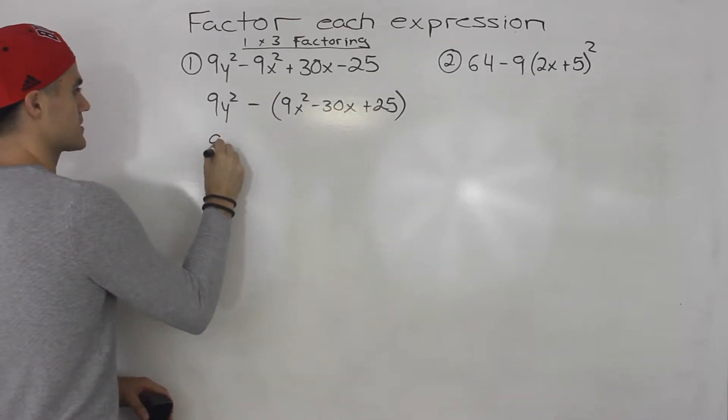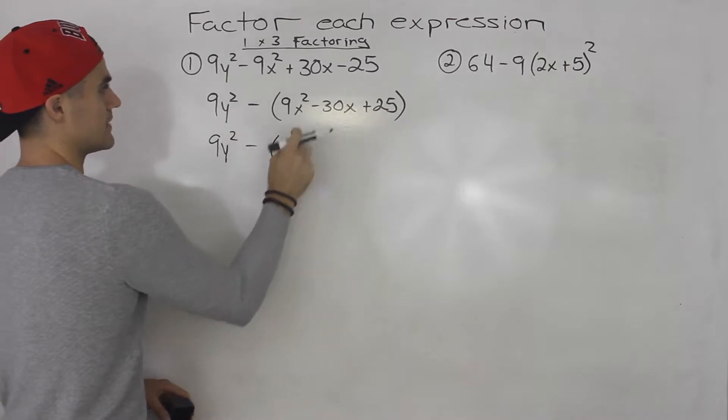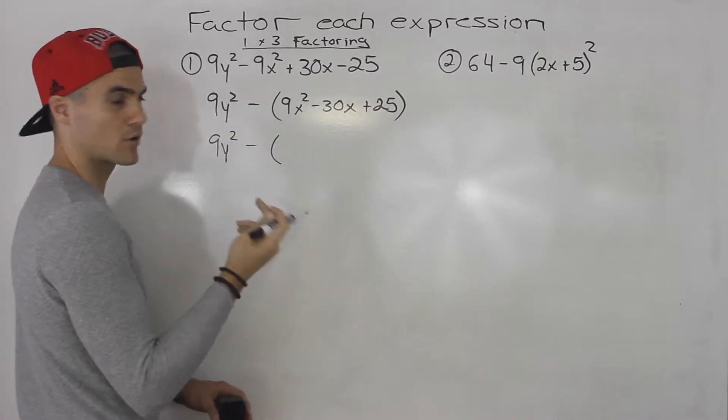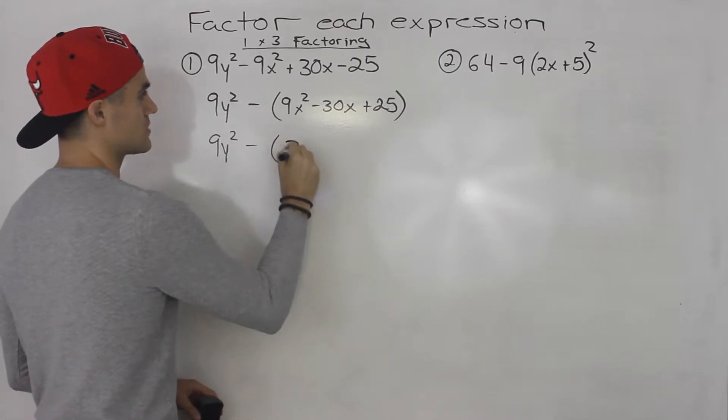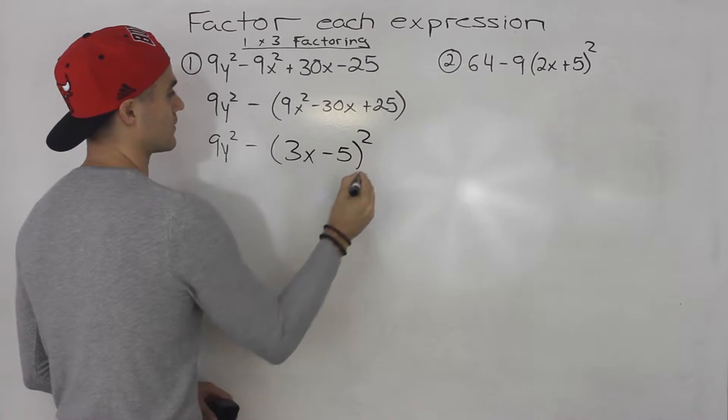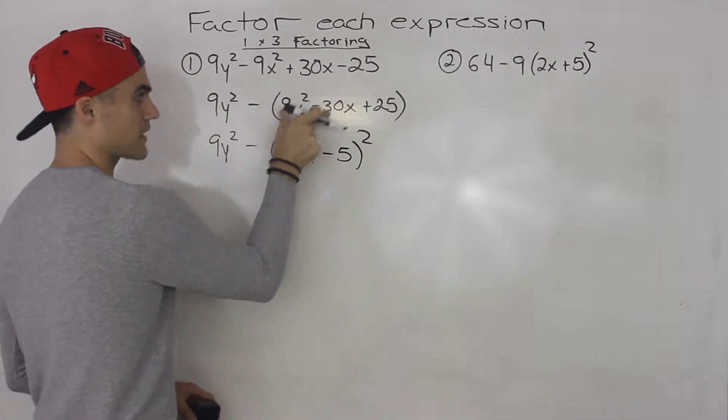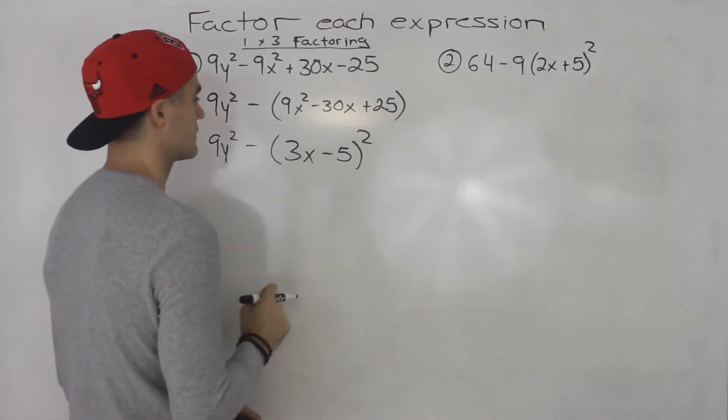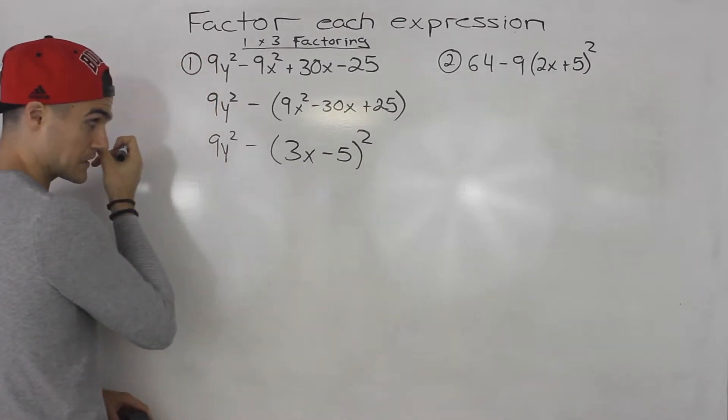And then what happens is if you factor this here, this is actually going to be a perfect square trinomial. So this will factor into 3x minus 5 squared. It's going to factor into 3x minus 5 times 3x minus 5, which ends up being 3x minus 5 squared.